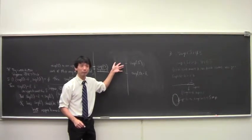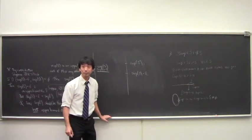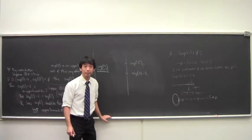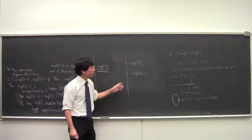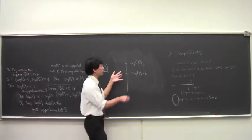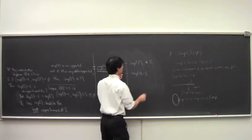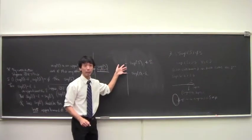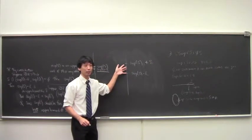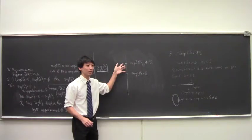Can somebody tell me why? Can somebody explain why? Just now we said there must be one element of S in there. If this supremum is not in S, for any epsilon there must be one element in there. Well, in fact that implies there must be infinitely many.